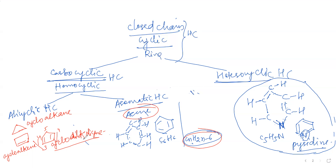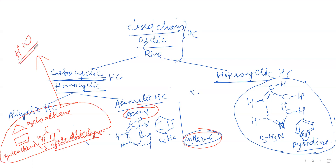Fine. Similarly, cycloalkene and cyclodialkyne exist. Your homework, Ojas: give me the general formula of these three types of alicyclic hydrocarbons. Write the general formula of all three. And always remember — in chemistry, never do it orally; always write it down. Then you will never forget.